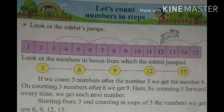Look at the rabbit's jump. Look at the numbers in boxes from which the rabbit jumped. If we count 3 numbers after the number 3, we get the number 6. On counting 3 numbers after 6, we get 9. Here, by counting 3 forward every time, we get each next number.